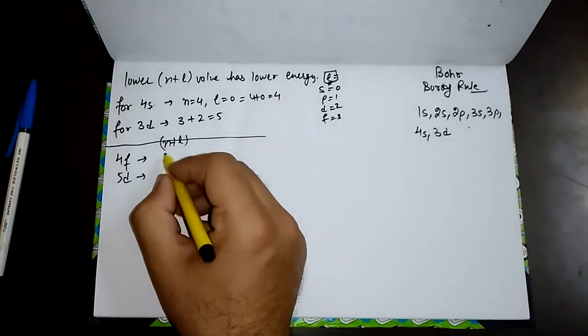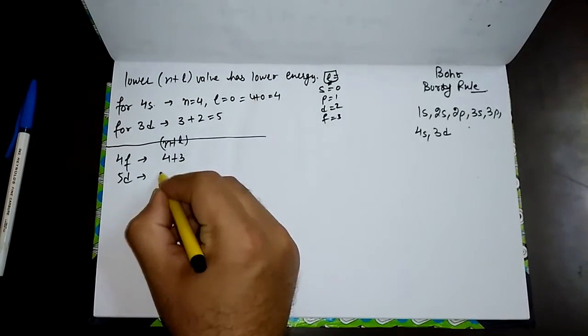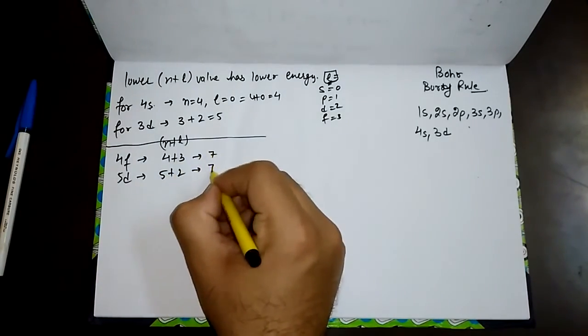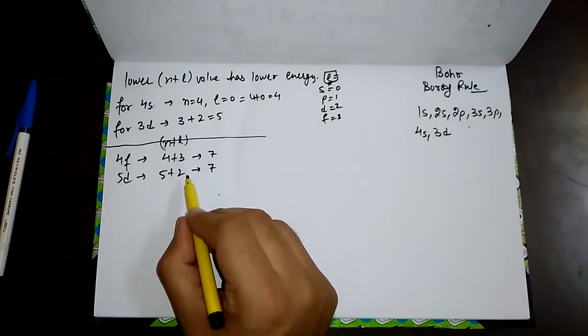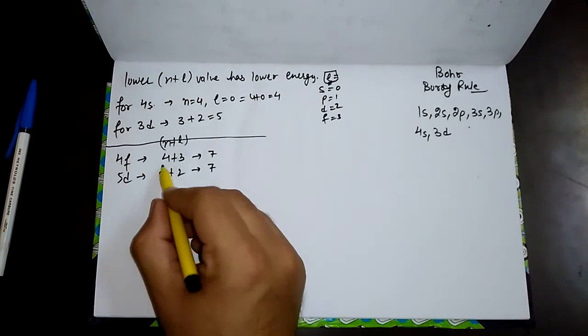According to the n plus l rule, the overall value will be 4 plus 3 equals 7, and 5 plus 2 equals 7. Under this condition, what we need to do is look for the orbital with the lower value of n.